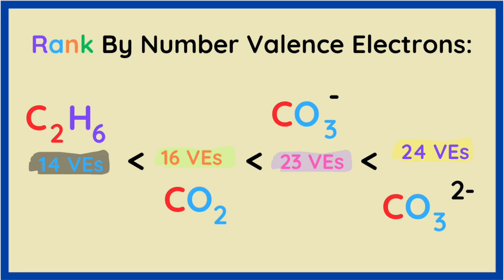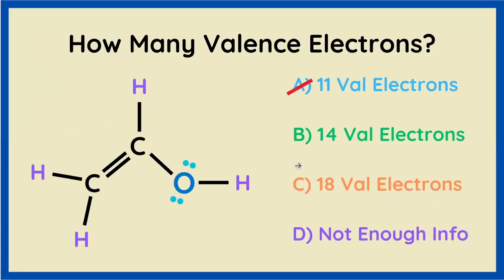Here's our final ranking with C2H6 the least, CO3 two minus the most. Still feel a little confused or overwhelmed? Check out the video on your screen and in the description where we focus on a single molecule and even reveal a new possible electron counting strategy that we can use.